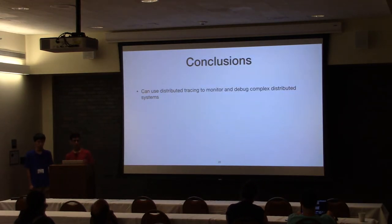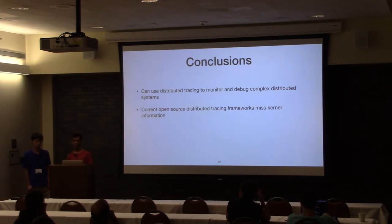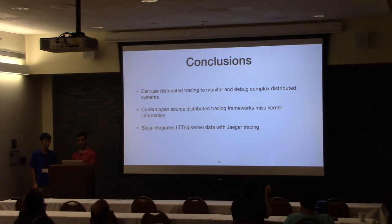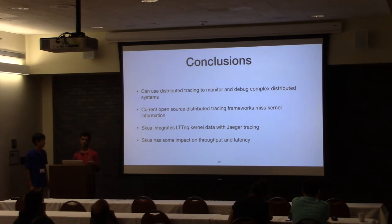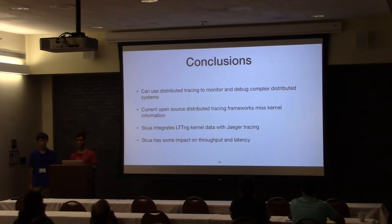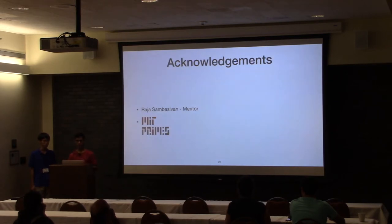In conclusion, we can use distributed tracing to monitor and debug all of these complex distributed systems. However, current distributed tracing frameworks miss kernel information, so we developed SCUA to integrate the kernel-level data from LTTNG with the information that Jaeger is already collecting. SCUA has some impact on throughput and latency — while it's not that bad and could be used for some applications, it may be too large for others. So it depends on whether or not it's applicable to production systems. Our code is open source. We'd like to acknowledge Raja who mentored us through this process and the MIT Primes program.